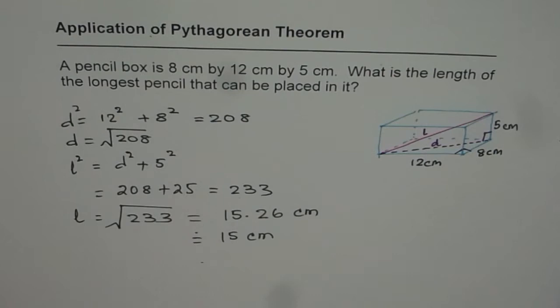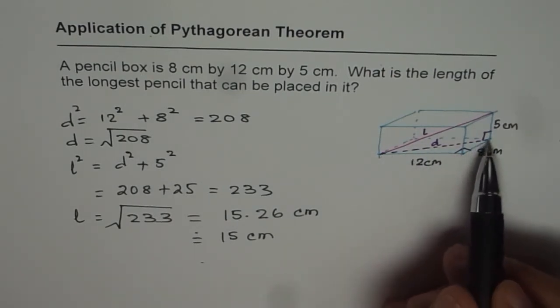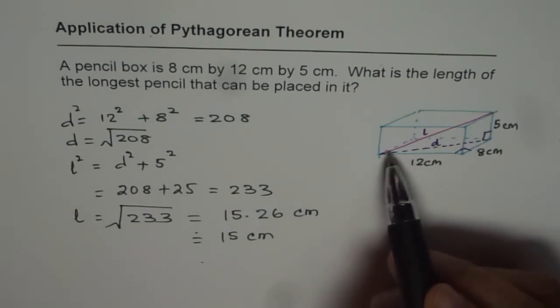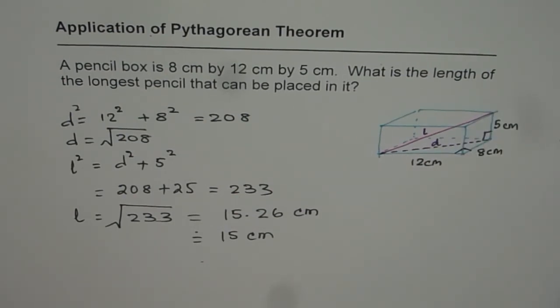I hope you appreciate how we did it. You need to first find the diagonal of the base, then consider the second triangle and find the pencil which could be put across as shown in the figure. I hope that helps. Thank you.